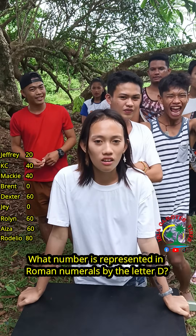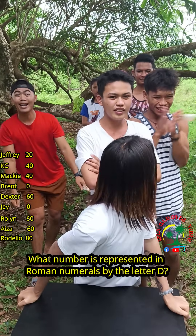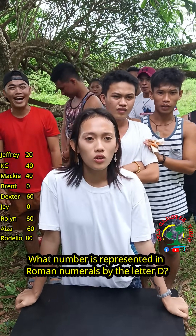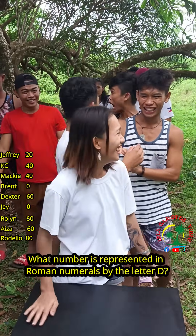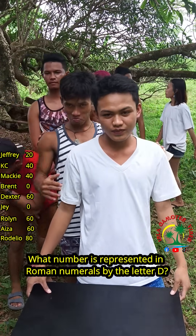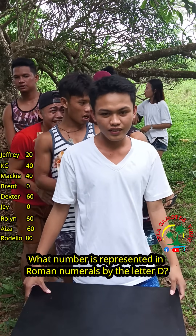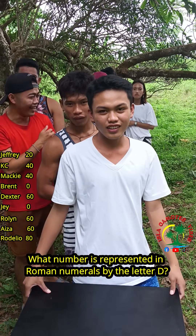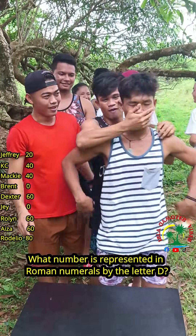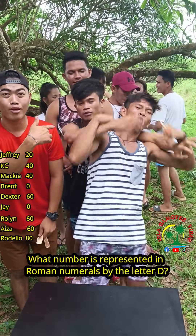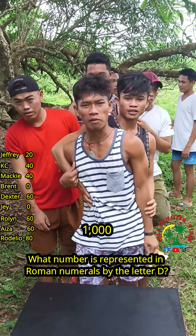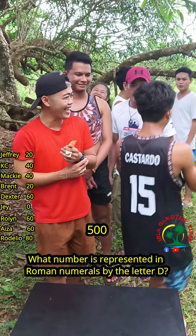Next question, what number is represented in Roman numerals by the letter D? Five. What number is represented in Roman numerals by the letter D? D — five. Four. Wrong. Next, what number is represented in Roman numerals? Five. Four. Three. Two. Six? Wrong. What number is represented by the letter D? 1,000? Wrong. Correct!